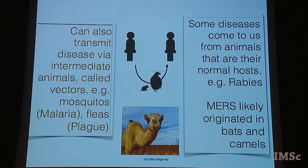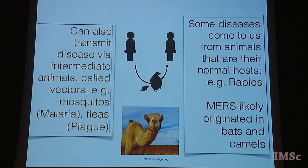You can also transmit diseases via intermediate animals or vectors — for example, mosquitoes for malaria or fleas for plague. Some diseases have animal natural hosts: MERS is supposed to have come from bats to camels and from camels to human beings, though the exact route from camels is not well known. Rabies is another example where dogs and other canines can carry the disease and transfer it to you by biting you.